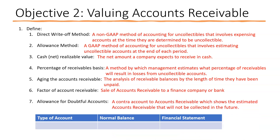The allowance for doubtful accounts is a contra account to accounts receivable that shows the estimated accounts receivable that will not be collected. Under the allowance method, you apply a percentage to your accounts receivable. It has a normal credit balance — opposite of accounts receivable's normal debit balance — and it appears on the balance sheet in current assets alongside accounts receivable.